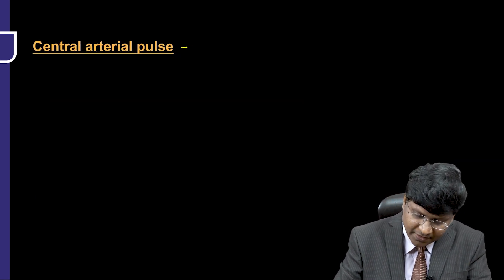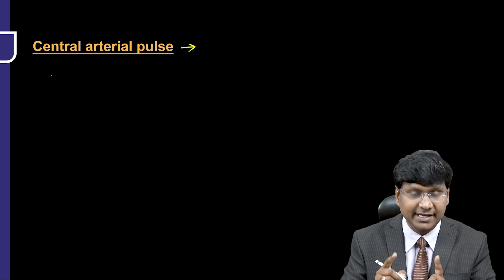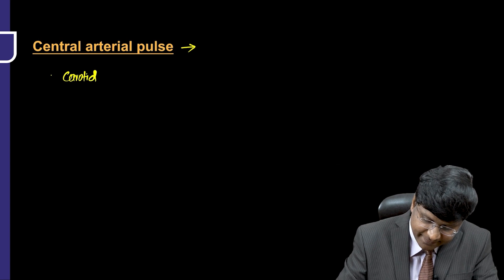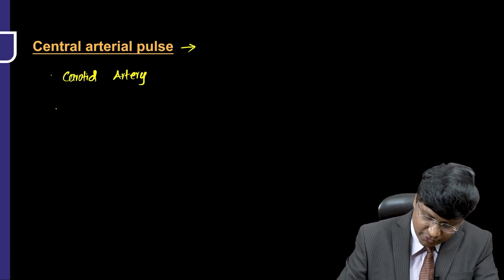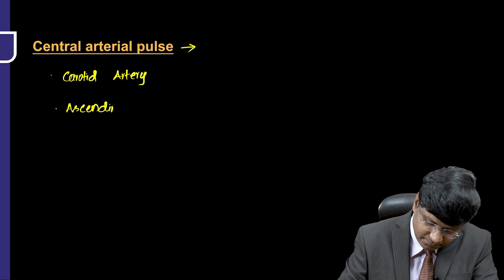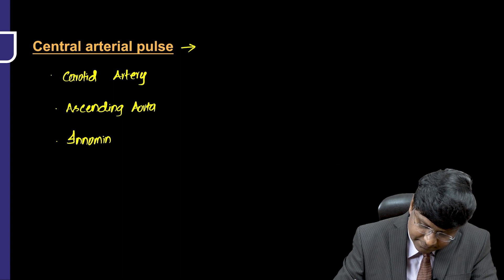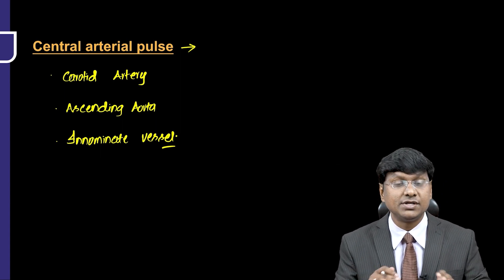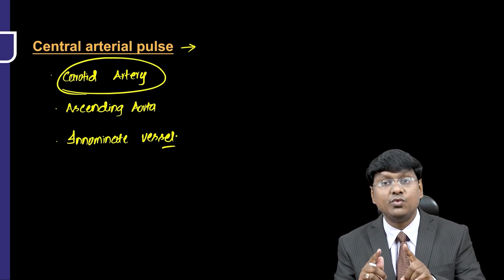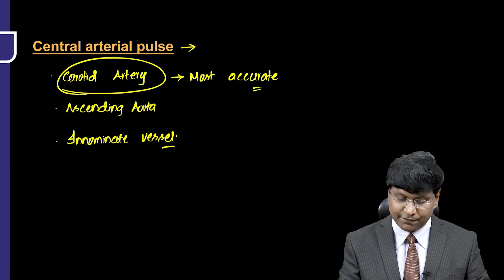First and foremost, you need to know what the central vessels are, which we palpate for making out the pulse waveform. That includes the carotid artery, which we can palpate, and other vessels we cannot palpate but which constitute the central arterial pulse — the ascending aorta and the innominate vessel, which is the brachiocephalic trunk. Out of these, it is the carotid artery which provides the most accurate representation of the central aortic pulse.